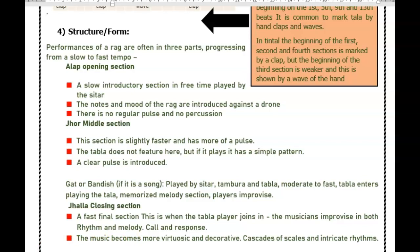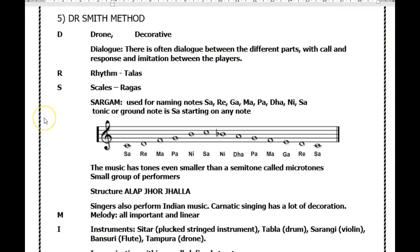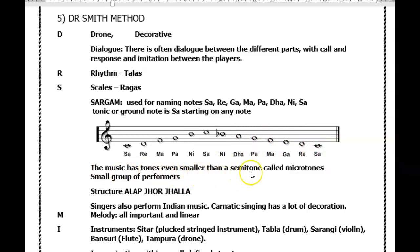The gat appears there again. The 'Dr. Smith method' identifies Indian music by the D — drone and decorative — dialogue, and rhythm, which we will discuss through the talas. The scale is called the sargam, and the note names return. The scale can start on any note. The music has tones even smaller than a semitone called microtones, in a small group of performers.